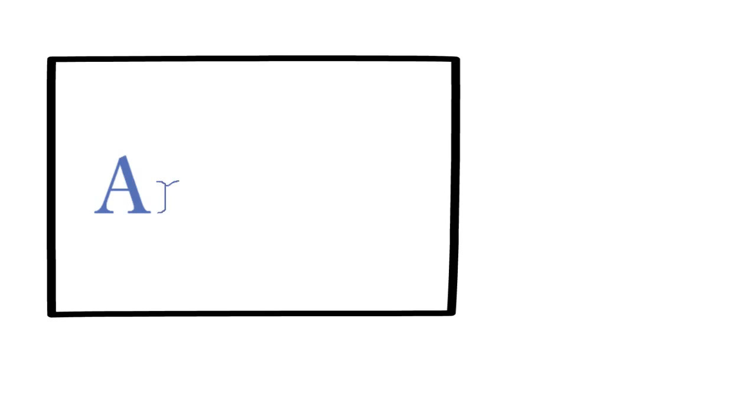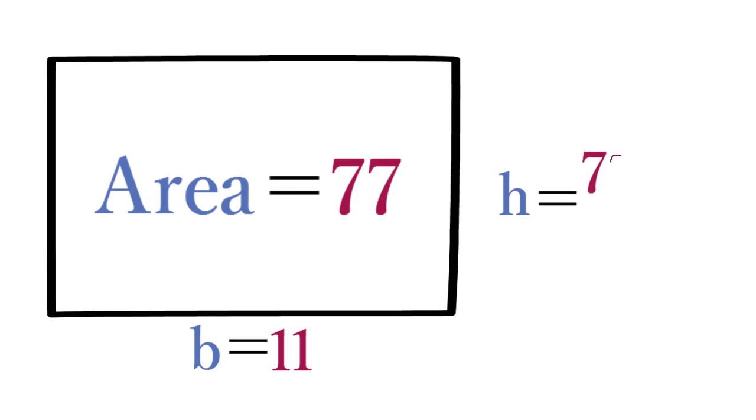And, as a final example, if the area of a rectangle equals 77 and its base equals 11, the height of that rectangle is 77 divided by 11, which equals 7.